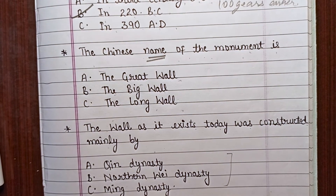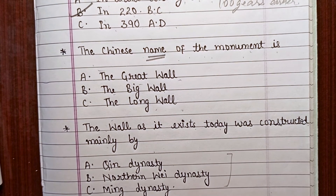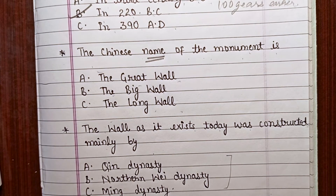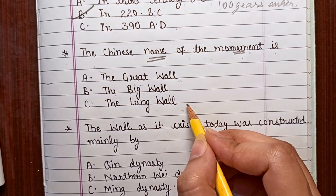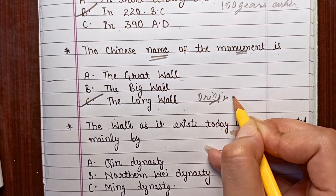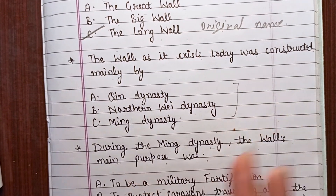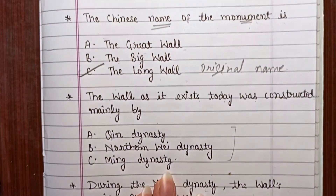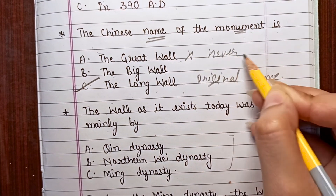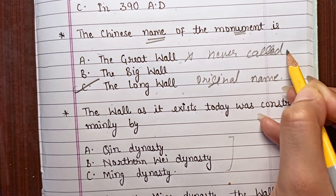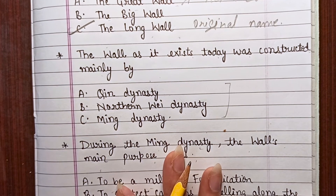Question 4: The wall as it exists today was constructed mainly by — [options given]. Question 5: During the Ming Dynasty, the wall's main purpose was to be — a military fortification / to protect caravans traveling along the trade routes / to contribute to the defense of the country. Now we will hear the listening to answer these questions.